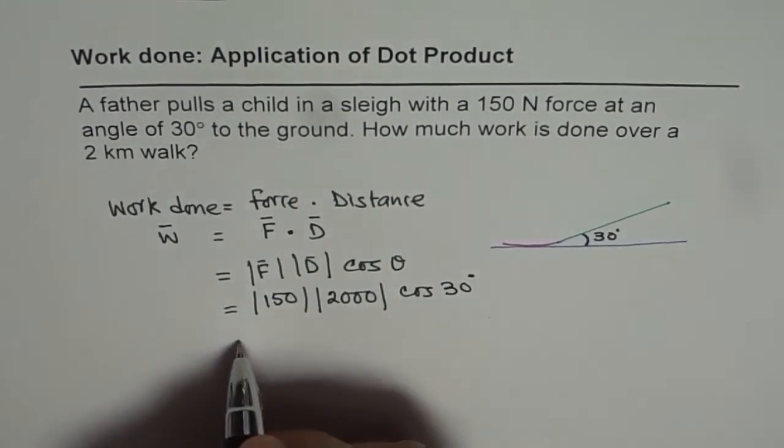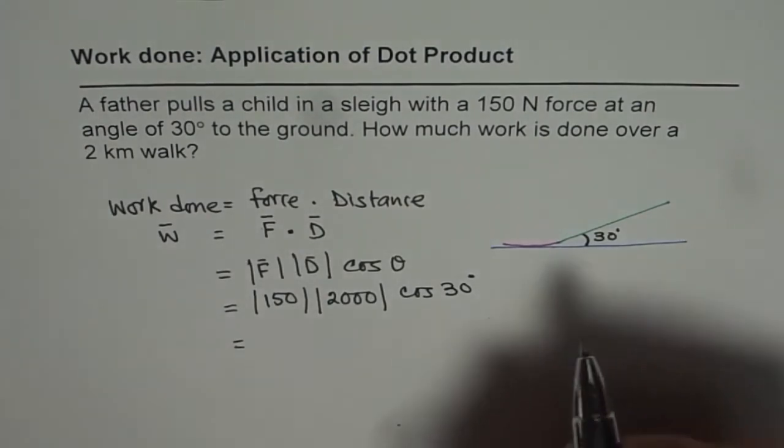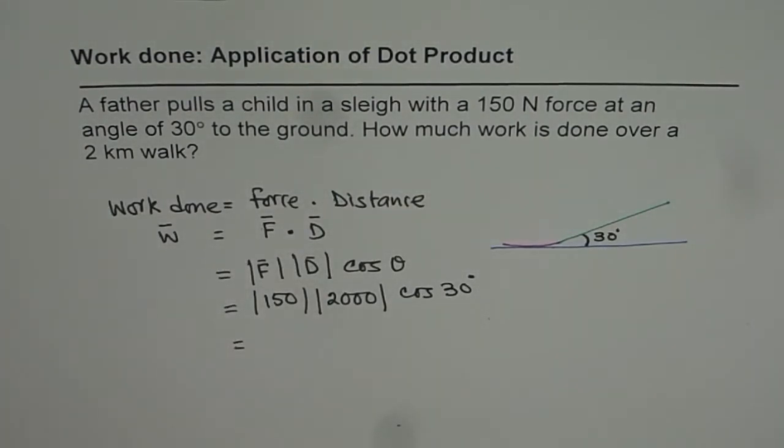So calculating this gives us the answer. So we can use the calculator. So we have 150 newtons, which is 150 times 2,000 times cos of 30 degrees.